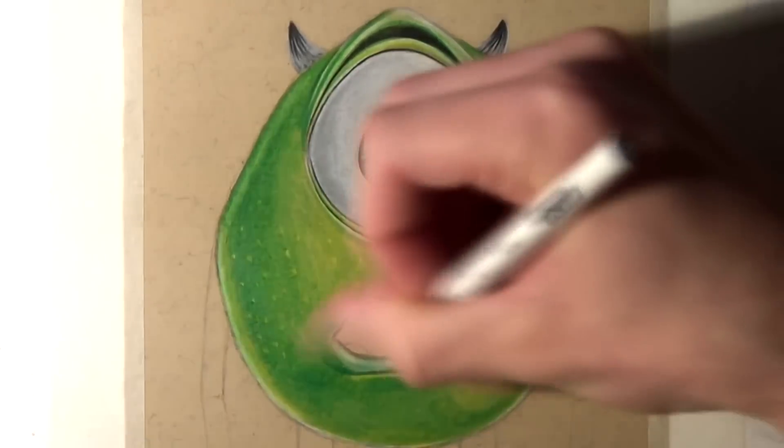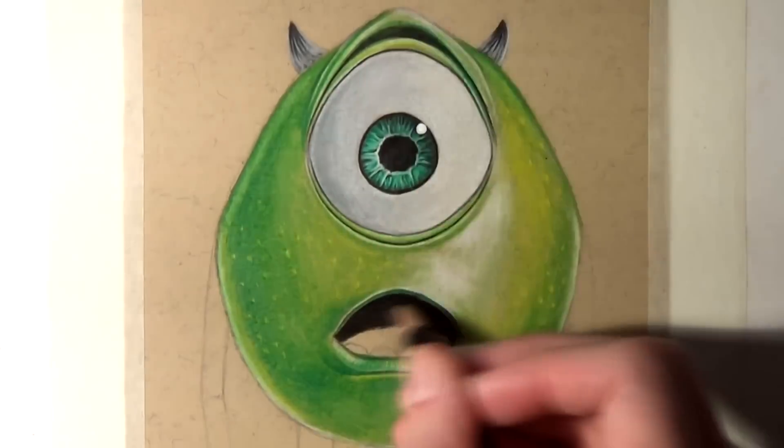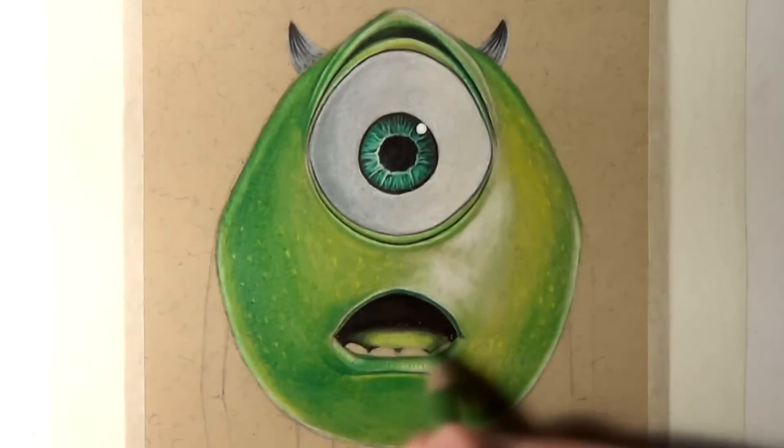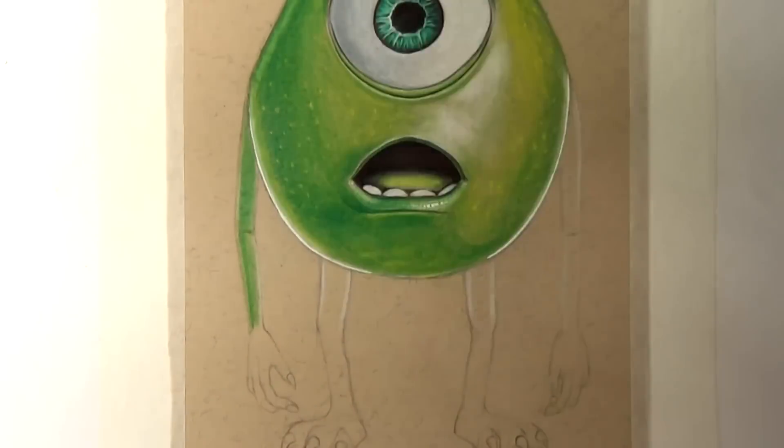And for that I used a Uniball Signobroad pigment ink white pen. This works really well when you want to add a white opaque highlight to an area that may have a reflection or around the outlines of a character to give a kind of backlit effect.